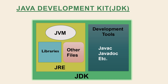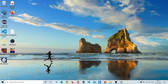Now let's understand what is JVM. JVM refers to Java Virtual Machine, which is a very important part of both JDK and JRE because it is inbuilt in both. Whatever Java program you run using JRE or JDK goes into JVM, and JVM is responsible for executing the Java program line by line — hence it is also called an interpreter.